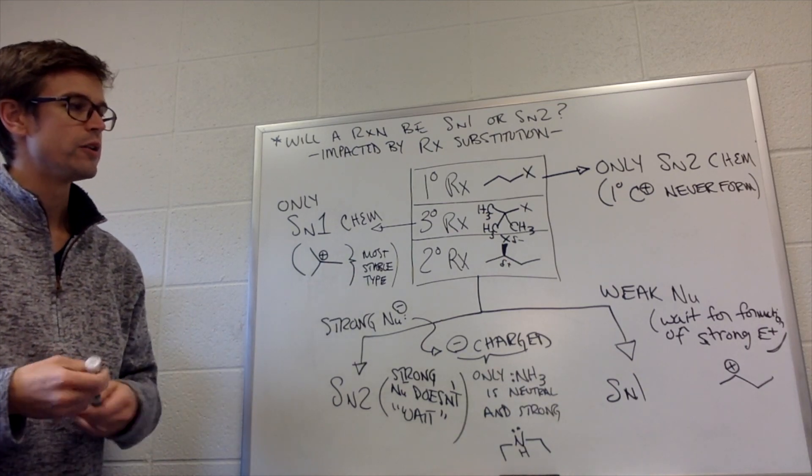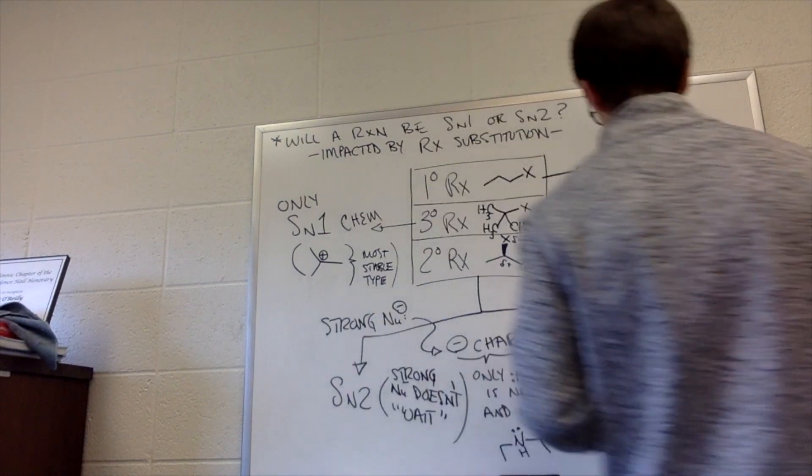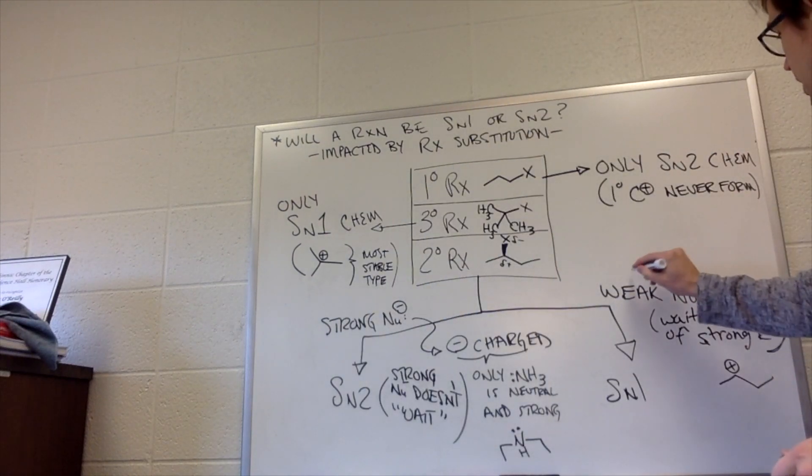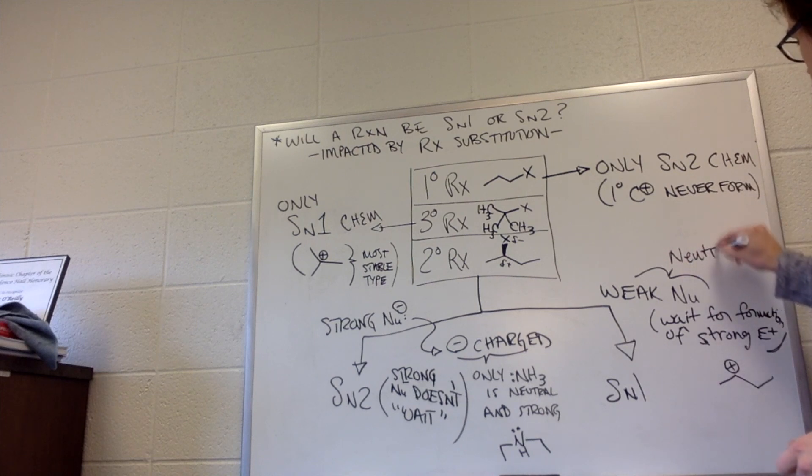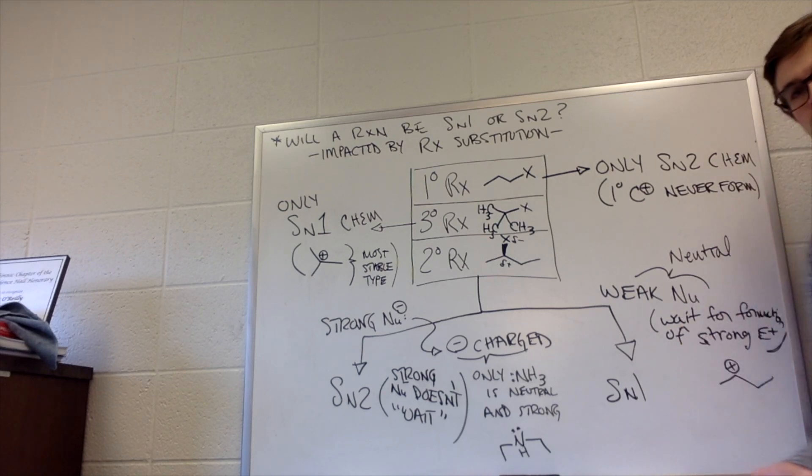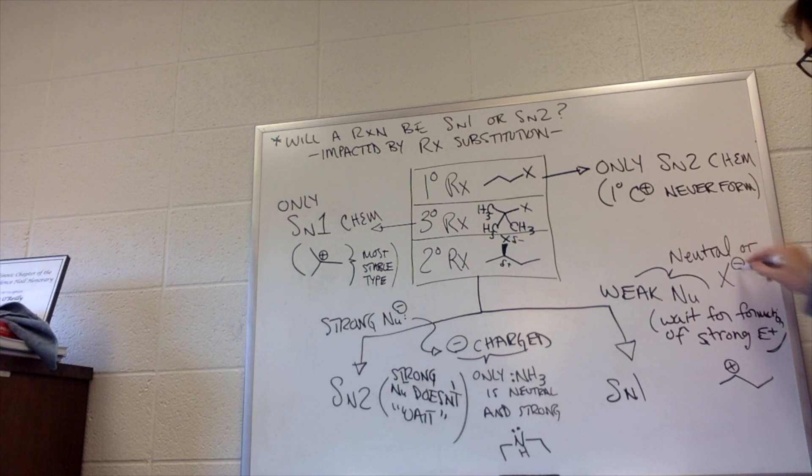So what are those weak nucleophiles? Weak nucleophiles would be characterized as being neutral. And there's one thing that doesn't follow that rule as well. Turns out that if neutral or X minus, so halogens, halogens are weak nucleophiles.